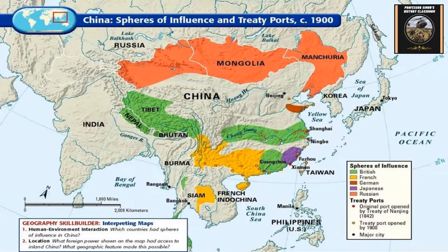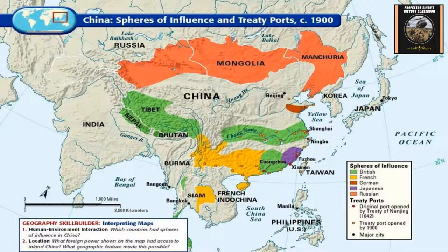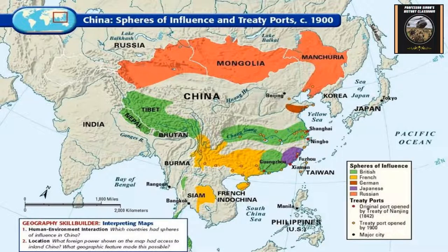Within years after that, China got controlled by all these different foreign powers — not just European but Japanese as well. Russia was in Mongolia, Japan controlled Korea, Taiwan, Manchuria, and parts of eastern China. Britain controlled most of the eastern southern part of China, especially around Hong Kong. The French were in the southern part of China and into Indochina as well. All these areas were dominated by different foreign powers.